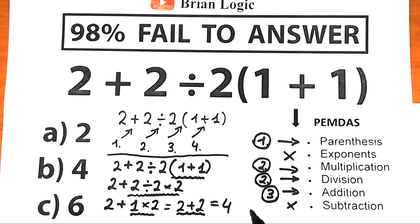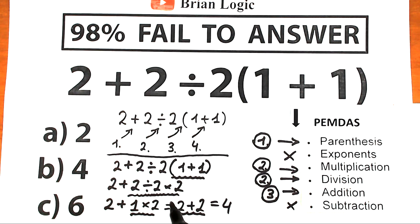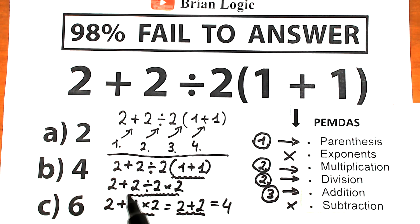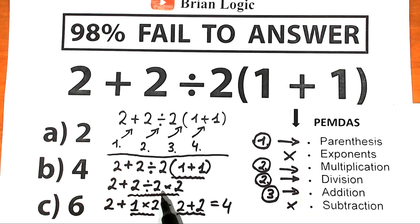It's important to understand the correct order. A common mistake is multiplying 2 times 2 first. If you want to divide by the whole expression on the right, you need to put brackets around it — for example, putting parentheses around 2 plus 2, giving you 2 divided by 4. But you must add those parentheses explicitly; otherwise we solve the regular expression from left to right, step by step.